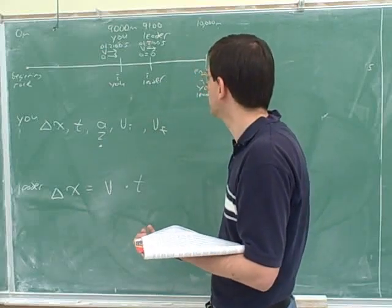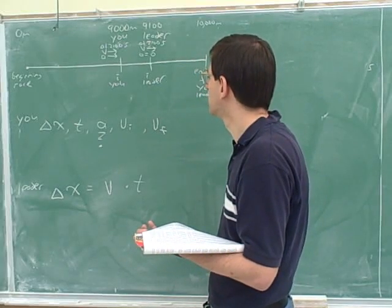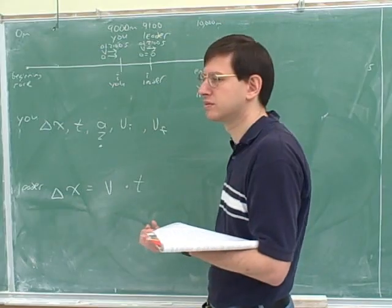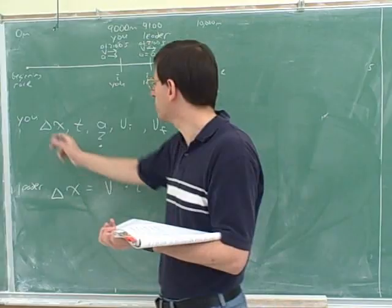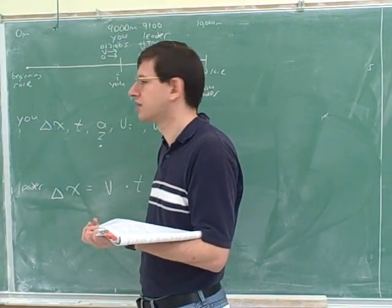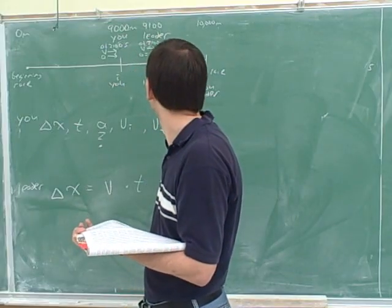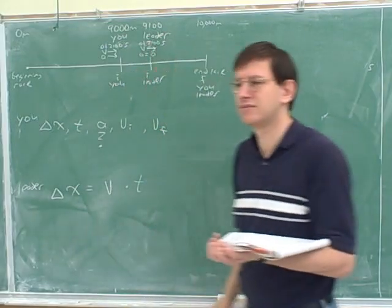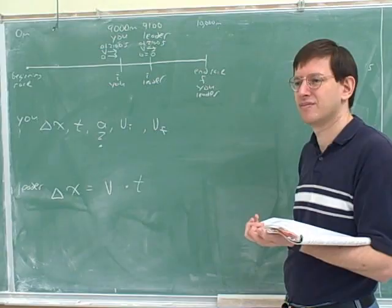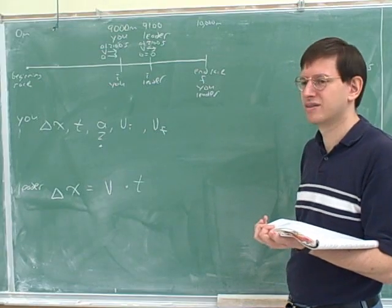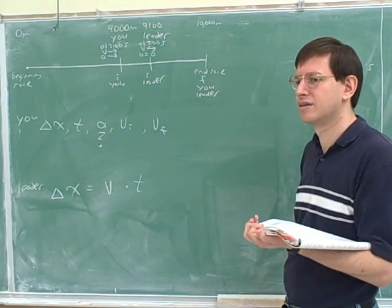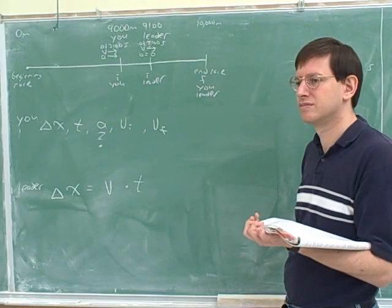So which of these variables do we know for you? We know x, we know t. Yeah, what should we plug in for delta x? 9,000 meters. Oh, no, we have to go 1,000 meters. 9,100.